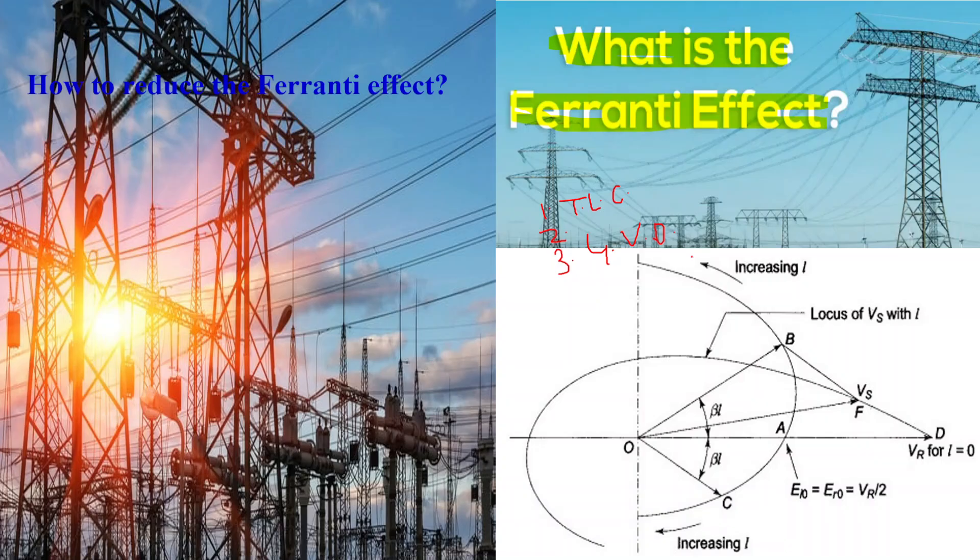Tenth, compensation and control. Power utilities employ various methods to mitigate the Ferranti effect and regulate voltage levels along the transmission line. These methods include the installation of shunt reactors, series capacitors, voltage regulators, and synchronous condensers to manage reactive power flow and maintain voltage stability.